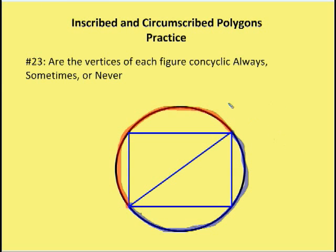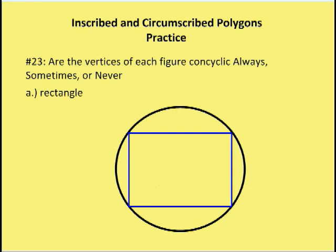Problem number 23 from the textbook says: Are the vertices of each figure concyclic — always, sometimes, or never? So we have a bunch of different figures, and we're going to determine whether or not they're always, sometimes, or never concyclic.